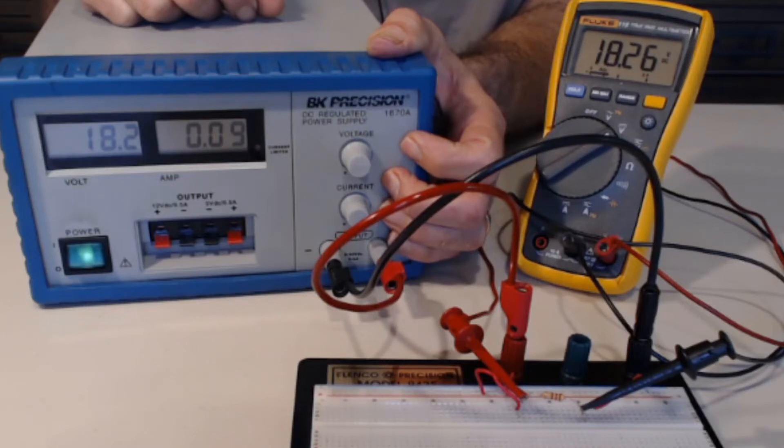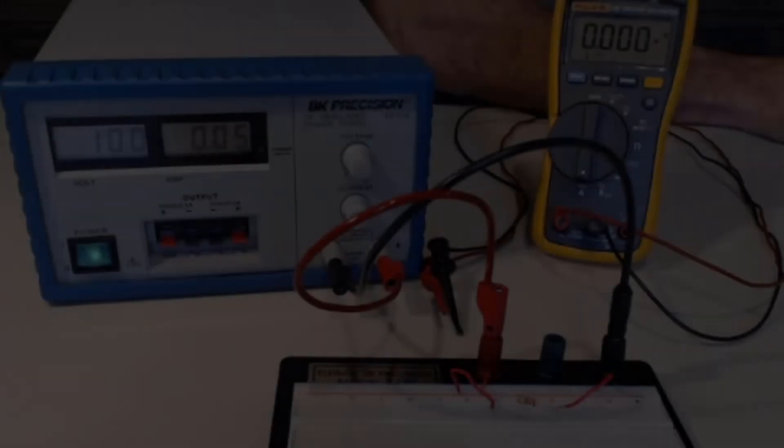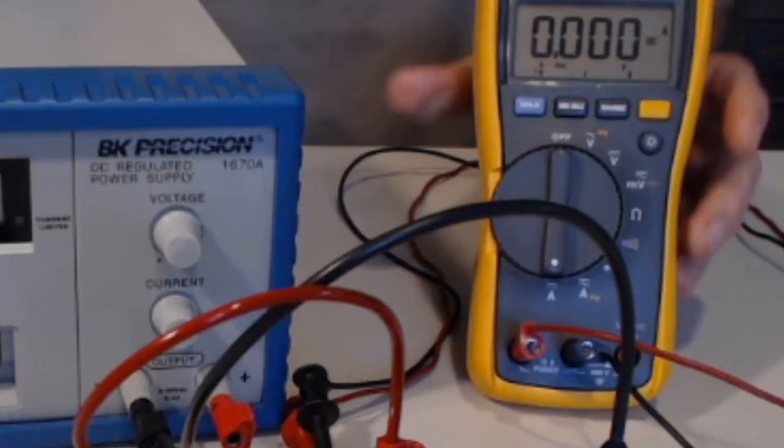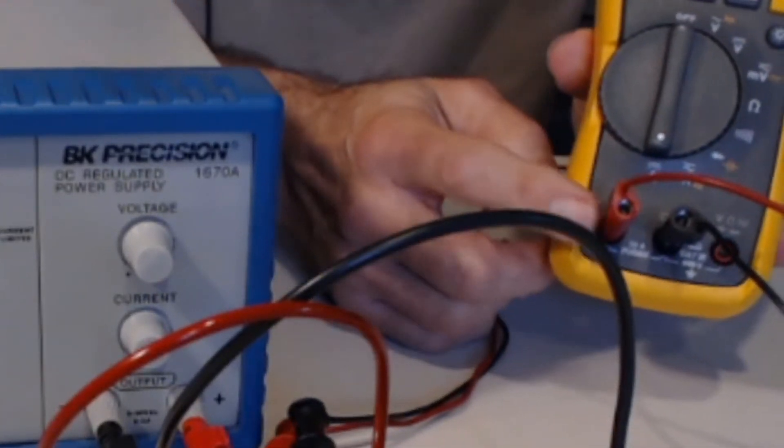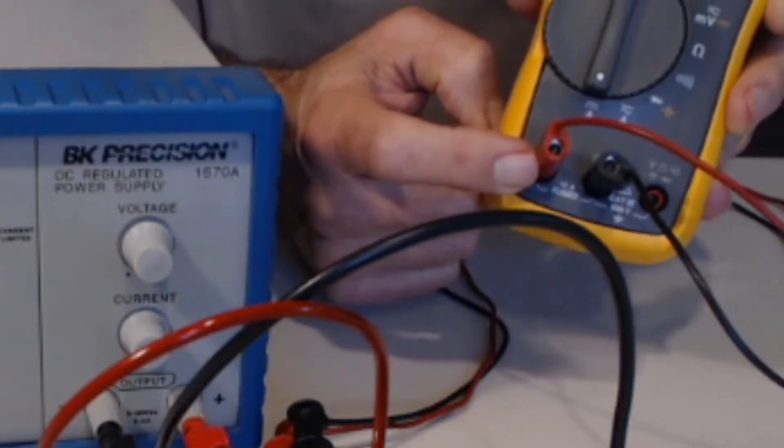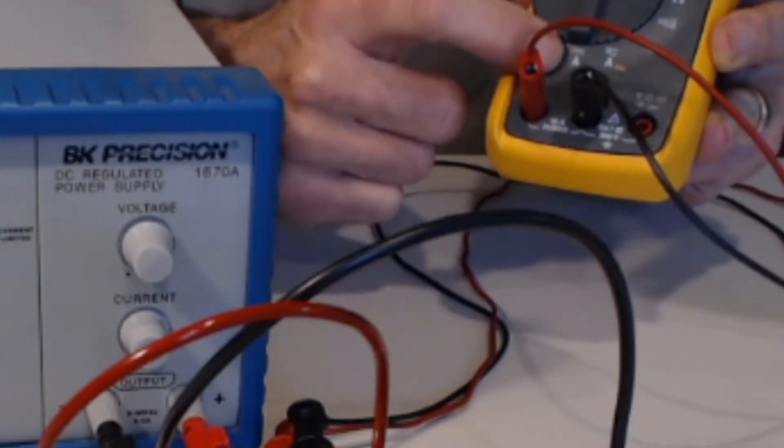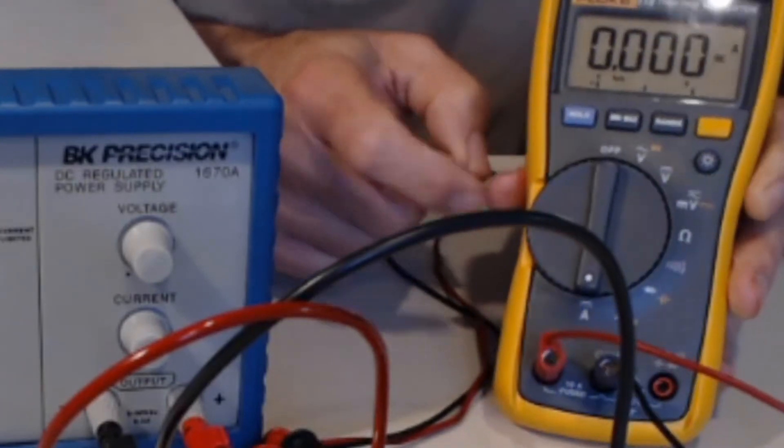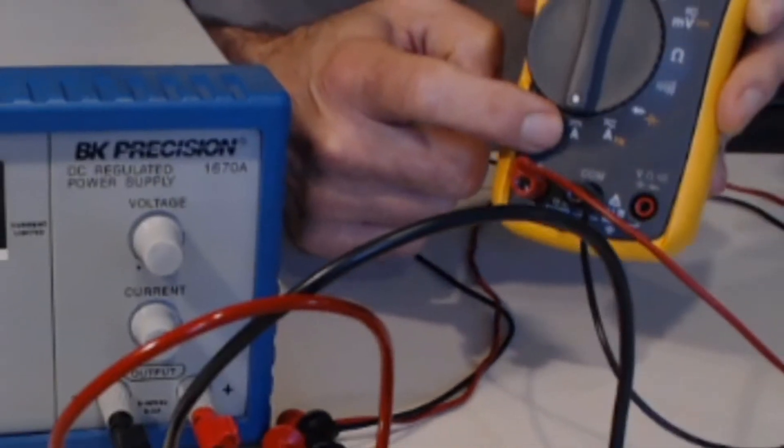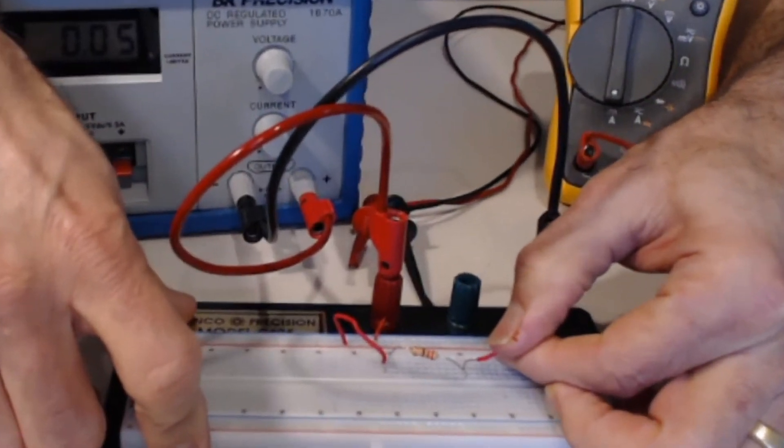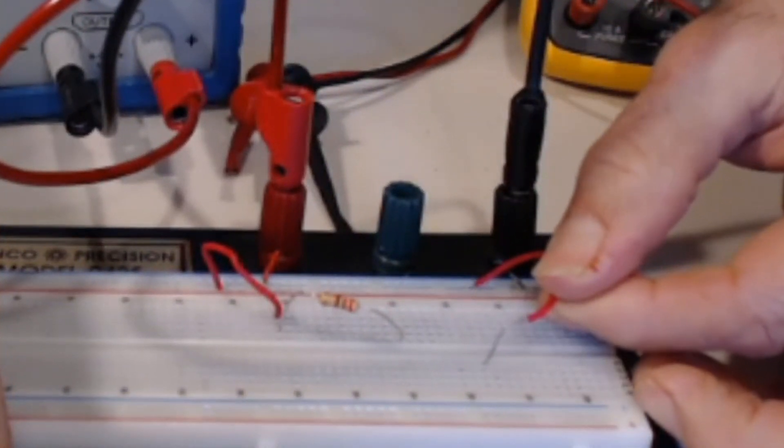Now let's take a look at current. To measure current, we have to, first of all, change the input to the current input. Change our function to current, DC current. A is for amps, that's a current measurement. And then we have to disconnect something in our circuit. So I'm going to unplug that wire there.